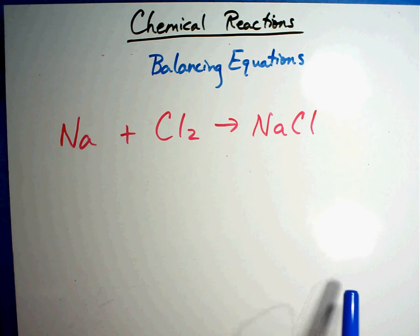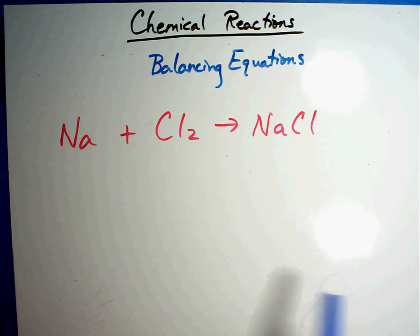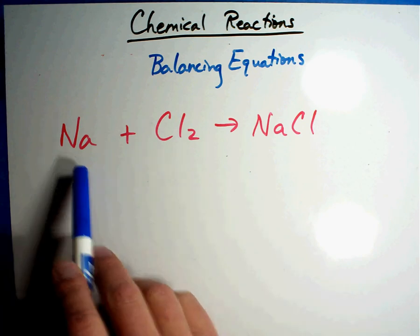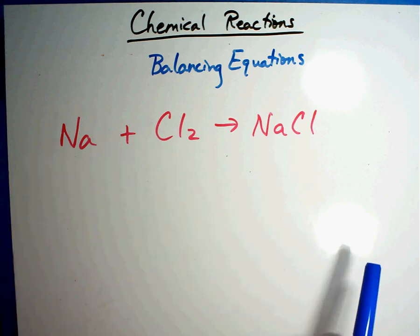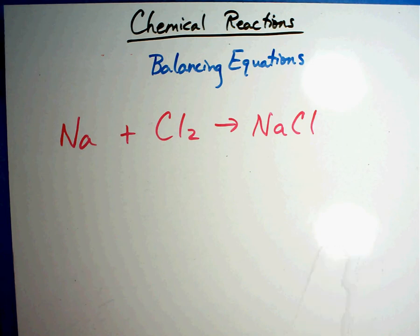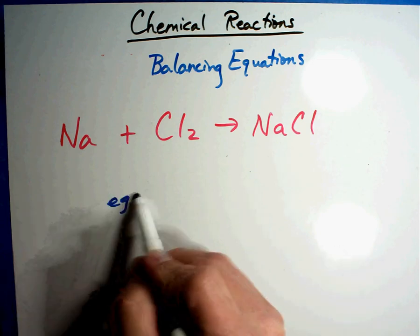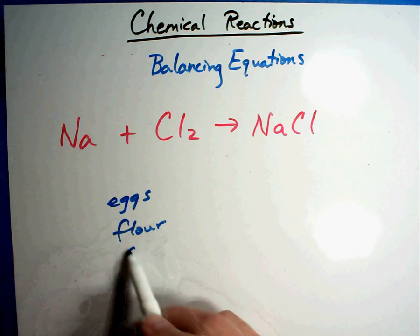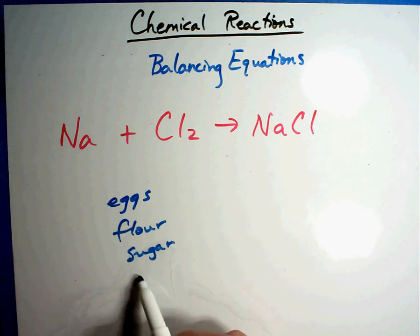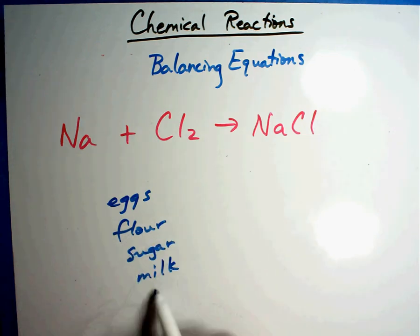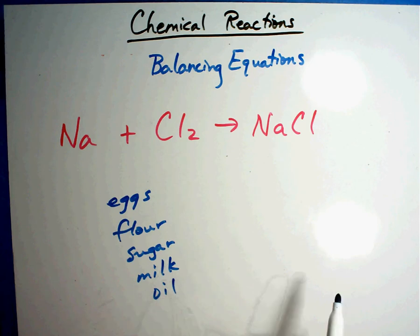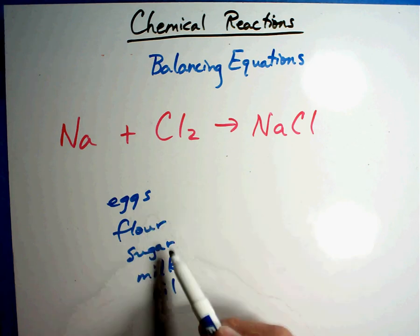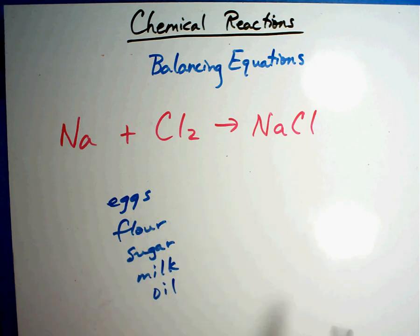What we're going to do is balance the equation. Here's what that means. I know the ingredients — it's like making a cake. If I want to make a cake, I know I'm going to have eggs, flour, sugar, maybe a little milk and oil depending on the kind of cake. But can I just throw eggs, flour, sugar, milk, and oil into a bowl and make a cake? No, I can't. I have to have a recipe.